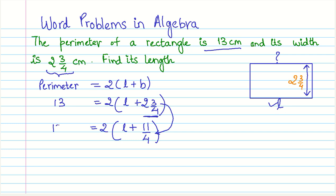Now, the next step would be to simplify by multiplying this 2 to both of them. So, we have 13 equals twice of length plus twice of 2 into 11 by 4. So, when you simplify this, what we get is 11 by 2. So, we have the equation something as 13 equals 2L plus 11 by 2.